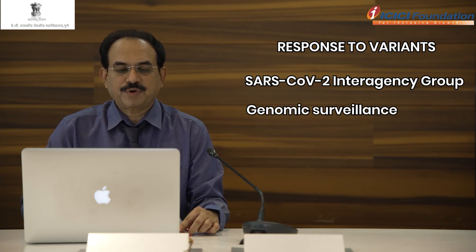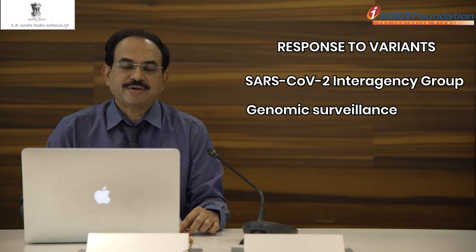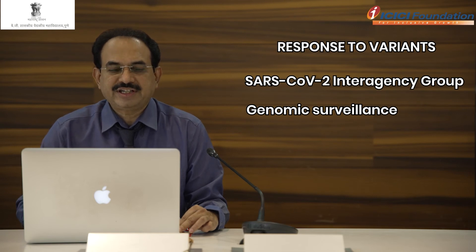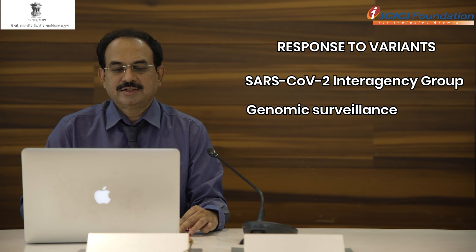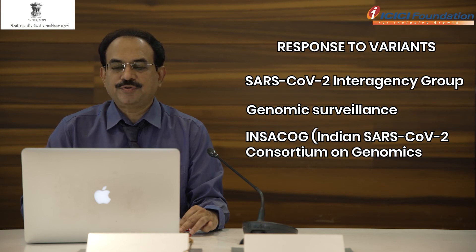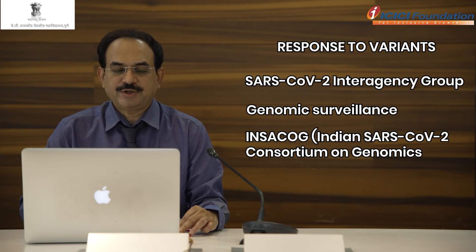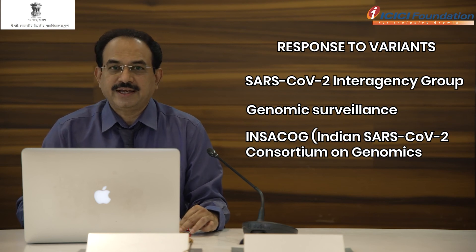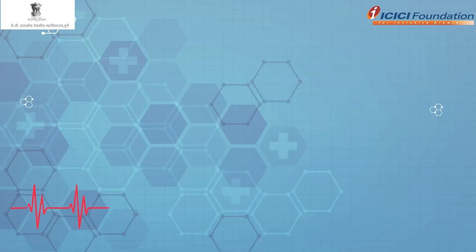Genomic surveillance is the most important thing here. Random sample testing of various isolates can help in finding a new variant. In India, we have a very specific activity against finding variants — a consortium formed by the Government of India called INSACOG, which stands for Indian SARS-CoV-2 Consortium on Genomics. It was set up by the Ministry of Health and Family Welfare, Government of India, on 25th December 2020, as a consortium of 10 national laboratories. All laboratories are required to share 5% of positive samples with INSACOG to detect variants found in the Indian population.